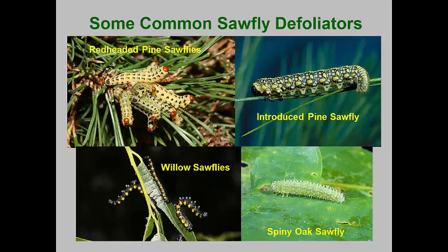Red-headed pine sawflies are much more dangerous than European pine sawflies because they have two generations per year. The first generation eats the previous year's needles, and the second generation eats the current year's needles — such defoliation can kill branches or entire plants. The introduced pine sawfly feeds on many pine species but is usually found in low numbers. Willow sawflies are easily noticed because of their bright colors and alarm response where they raise their abdomens when disturbed. The spiny oak sawfly is a solitary species that rarely causes much damage, but because of the spines it can easily be mistaken for a caterpillar.